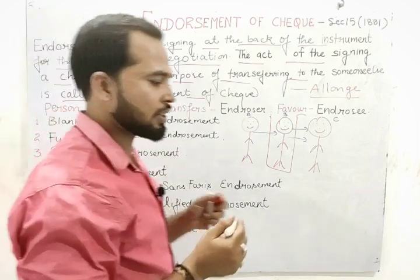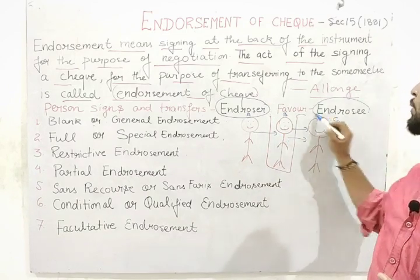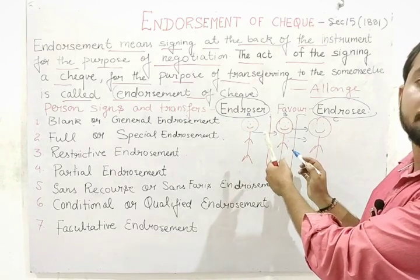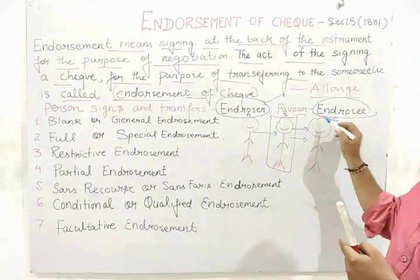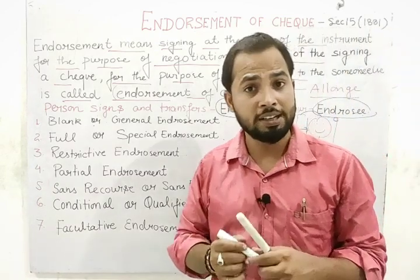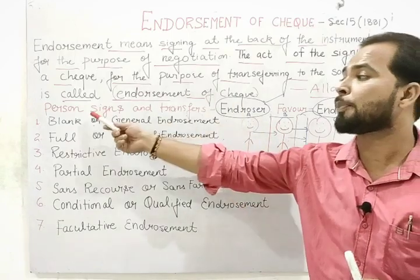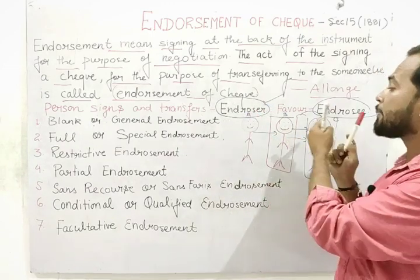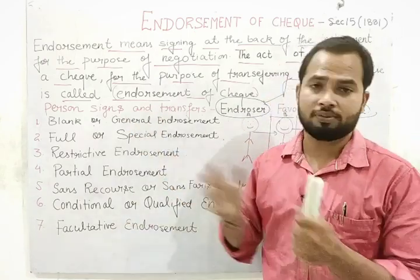In case of endorsement, we have two parties. The first one is the endorser and the second one is the endorsee. The person who signs and transfers the check is the endorser — so here Mr. B, who signed and transferred, is the endorser. The person who receives the check is the endorsee — so Mr. C will be the endorsee.